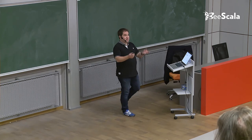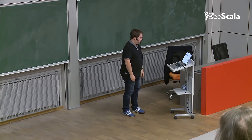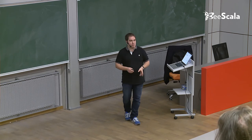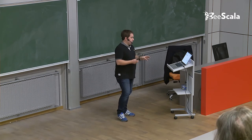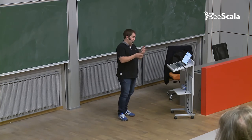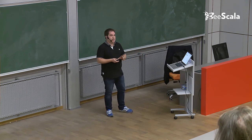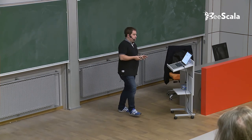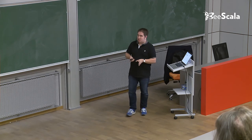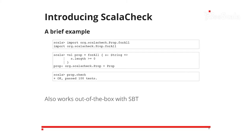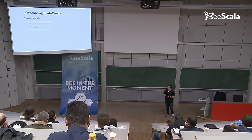So for those who don't know, or the one person who doesn't know what it is, a brief example. ScalaCheck is a testing library for Scala. It's similar but actually a little bit different to unit testing libraries in the way that you write and think about tests. The heart of the library is this method called `forAll`. What we can do with this is we can pass in a type parameter and then have some code that ends up with a predicate, or what we call a prop or a property.